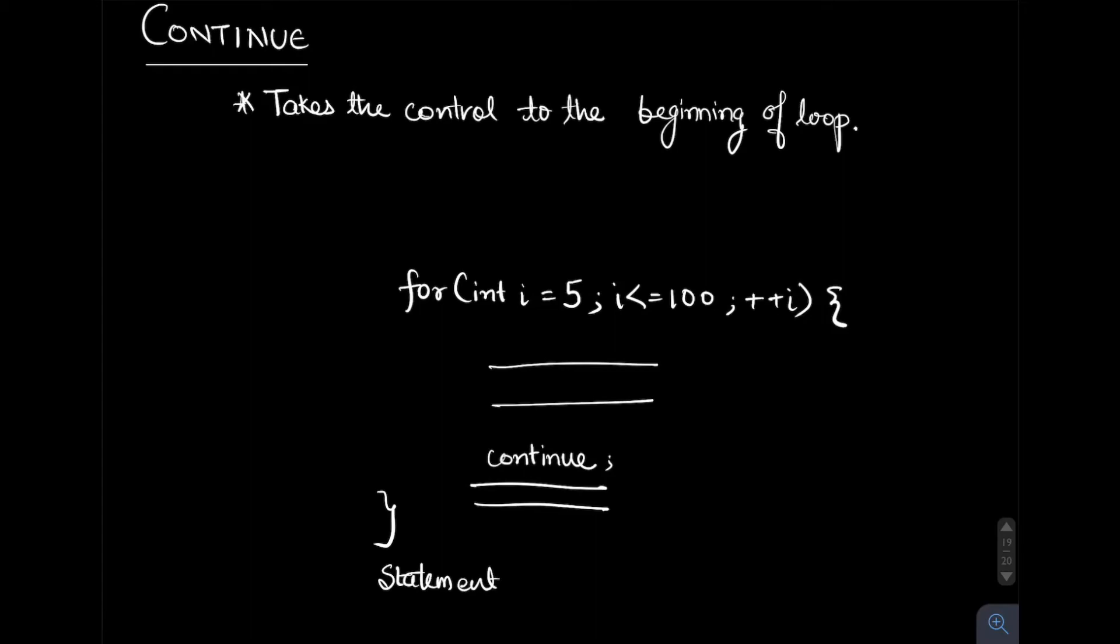For example, here we have taken a for loop where the loop counter i iterates from 5 to 100. In this situation we have statement 1, statement 2, statement 3, and statement 4. Statements 1 and 2 will get executed for each iteration.